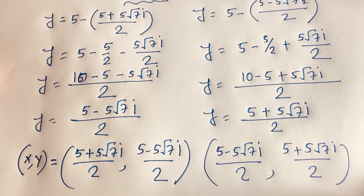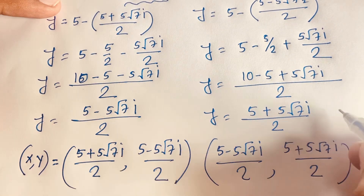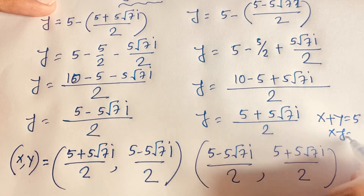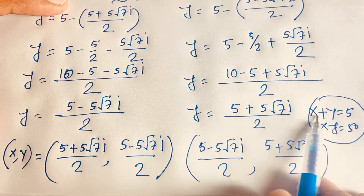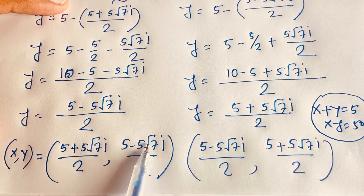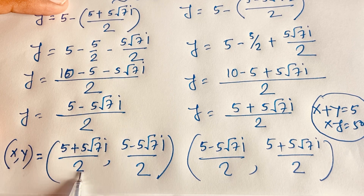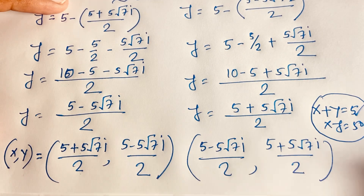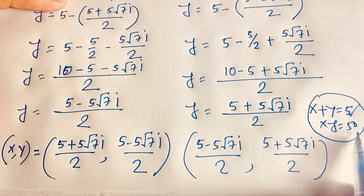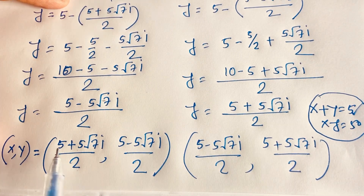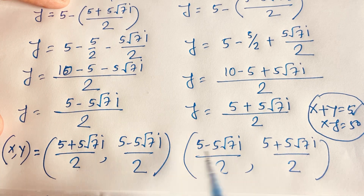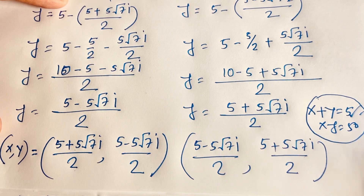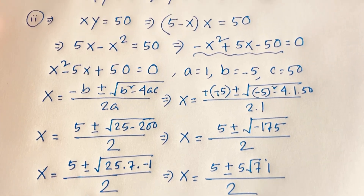This is our final answer. In this math question, x plus y equals 5 and xy equals 50, so both x and y are complex solutions. When I add both x and y, the imaginary parts cancel, and 5 plus 5 over 2 gives 10 divided by 2, which equals 5 — so left-hand side equals right-hand side. When I check xy, 5 squared is 25, and (5√7i)² is 175, giving 200 divided by 4 equals 50. So xy equals 50 and x plus y equals 5. Thank you all. If you enjoyed this video please subscribe to our channel. Goodbye, take care.